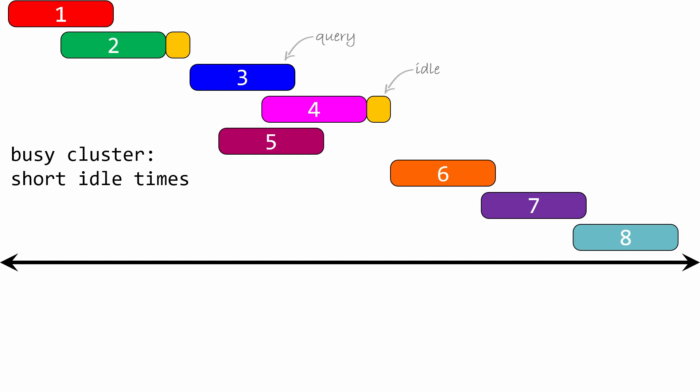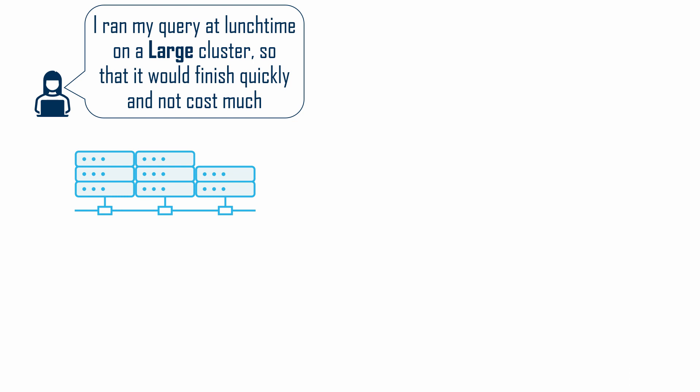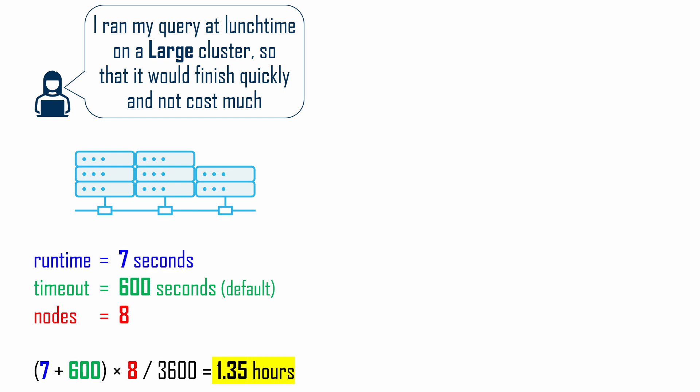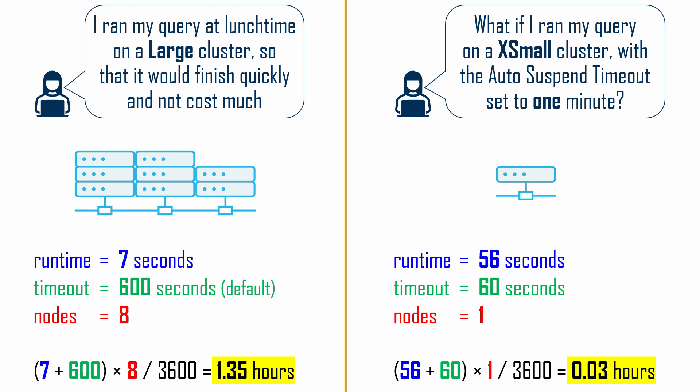When a cluster is busy running lots of queries, there is very little idle time. But idle times are much longer on a less busy cluster, and this is when the auto-suspend timeout should be lowered. For example, if you run a query on a large cluster when it's not busy, your query may run quickly, but since yours was the only query running, you also pay for all the idle time. With the auto-suspend timeout still at the 10-minute default, a 7-second query could consume over an hour of compute. Using a one-node cluster with its timeout set to one minute would be significantly cheaper.